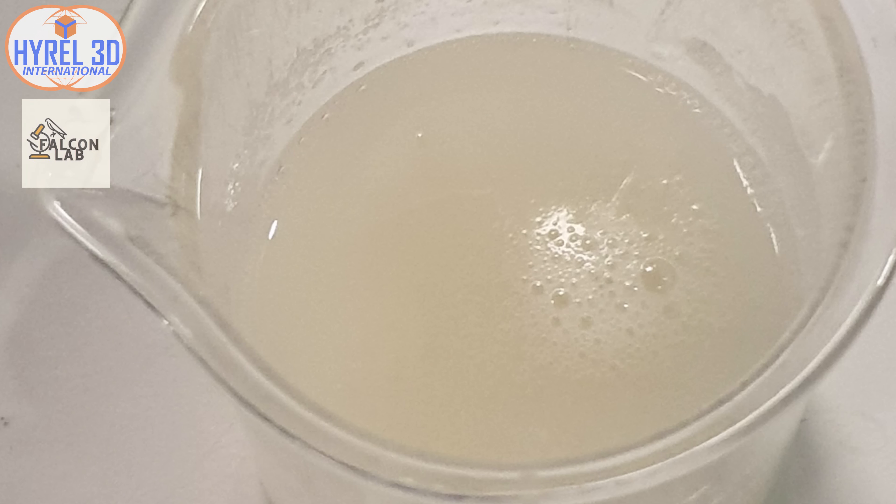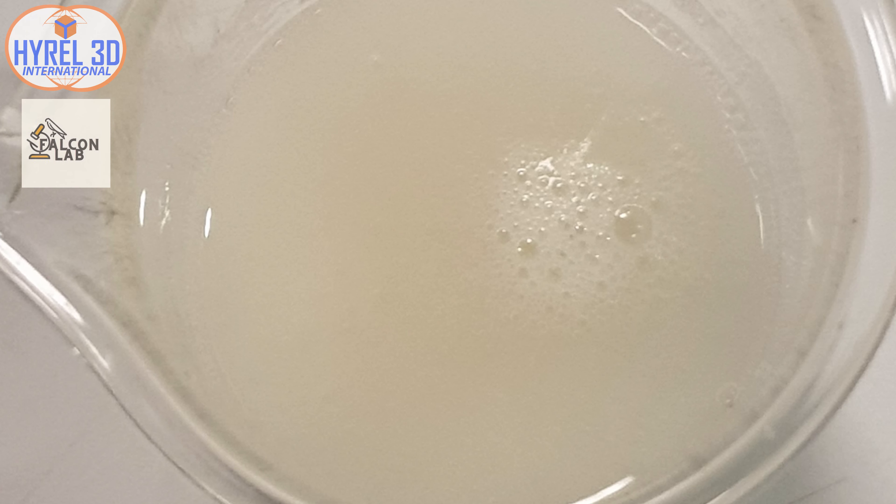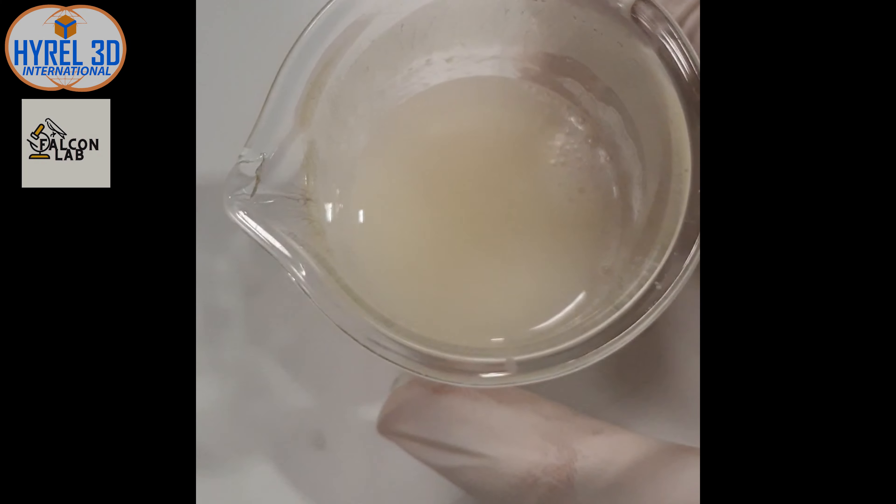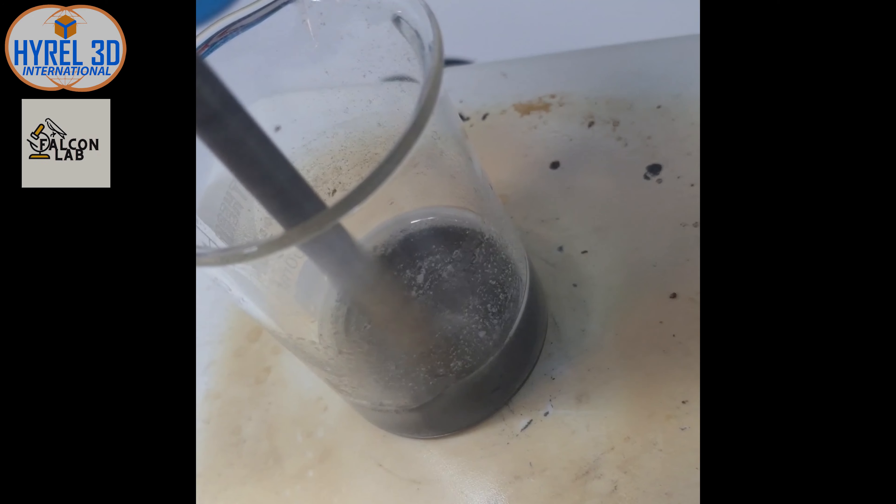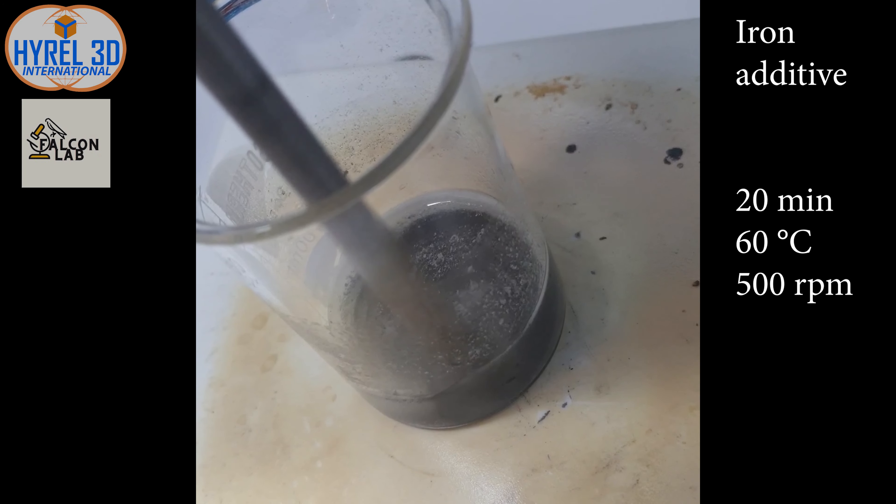After we finish mixing the hydrogel, you can notice the formation of air bubbles and foam on the surface of the mixture. We will get rid of them later. We will prepare a mixture of iron flakes and hydrogel that we have prepared in advance to be used as a material for scaffold printing.